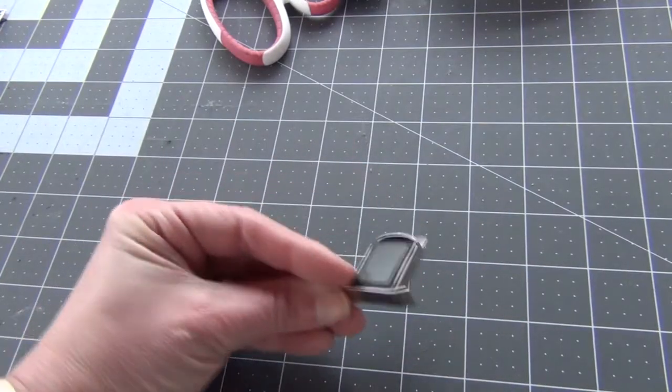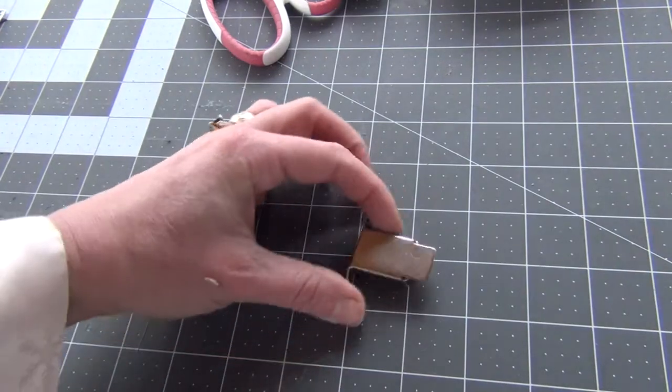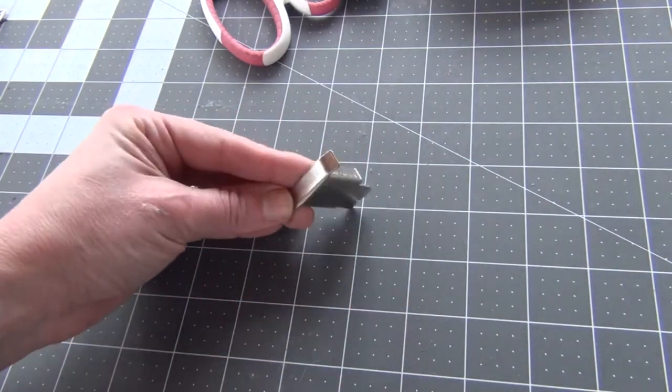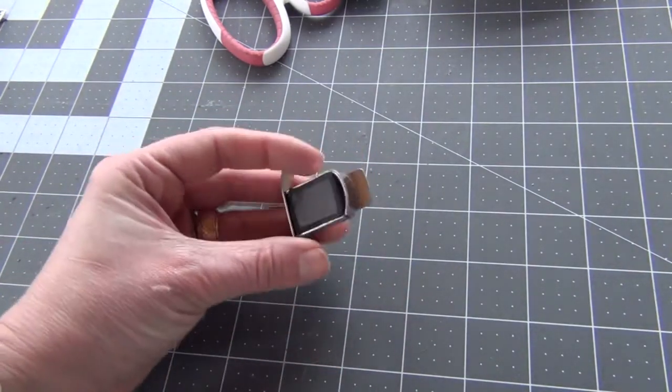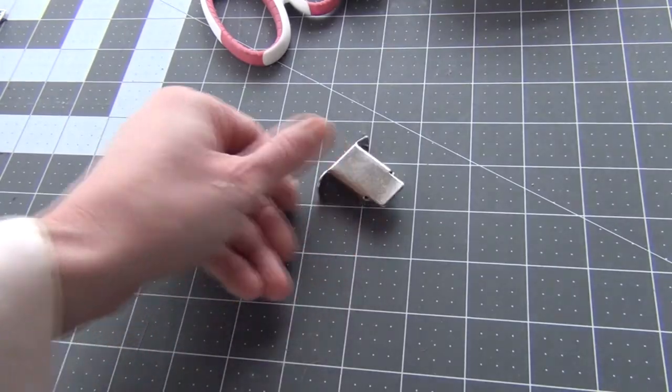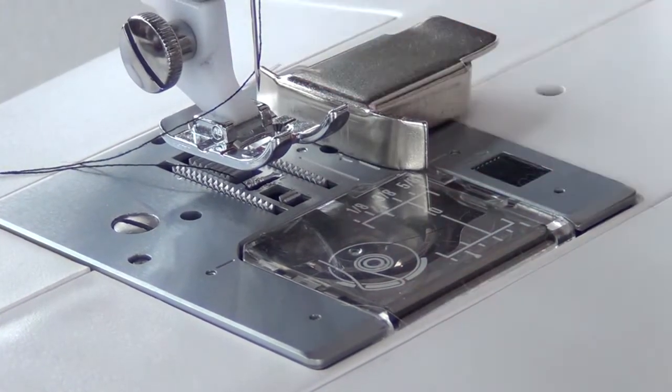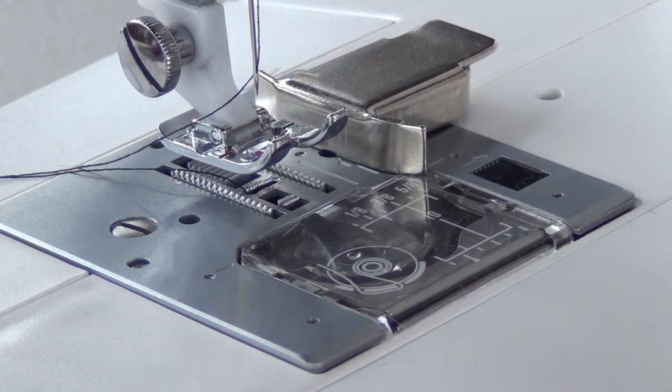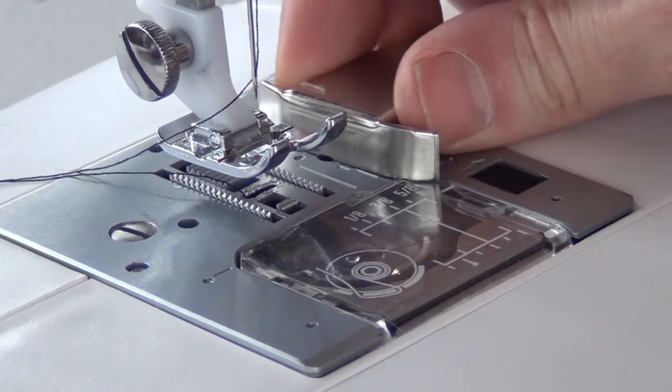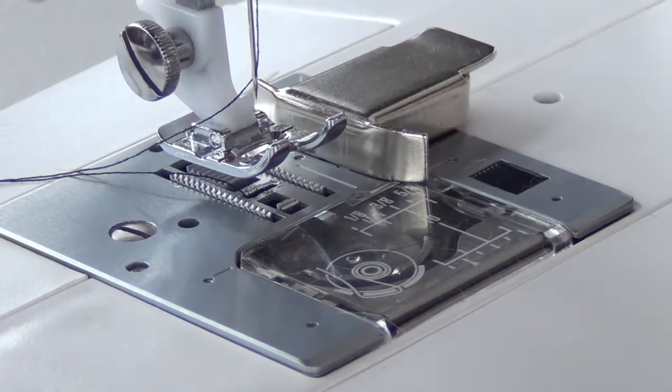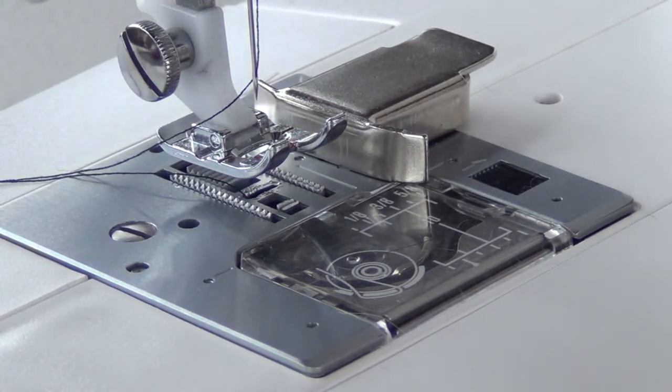This is my magnetic seam guide. I've talked about this in other videos. This is just a great little tool. It's really inexpensive. It has a magnet on the back. And how you use it is you just set it right at your seam allowance on your machine. Whatever your seam allowance you want to be and it'll just stay there. It's a strong magnet so it's not going to move around on you very easily.